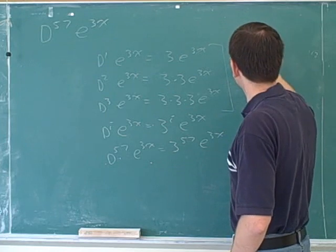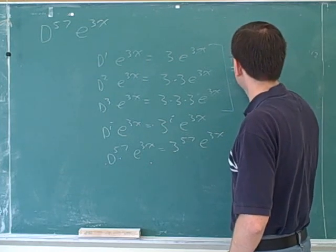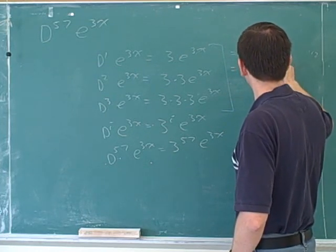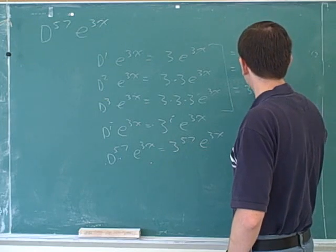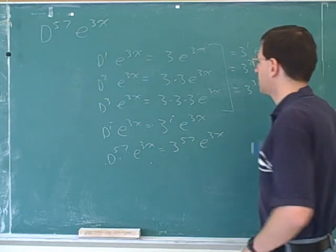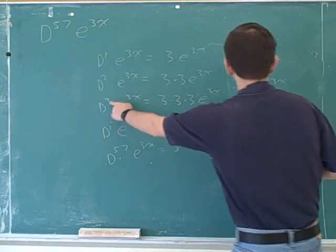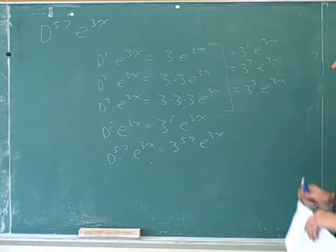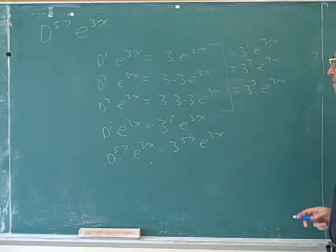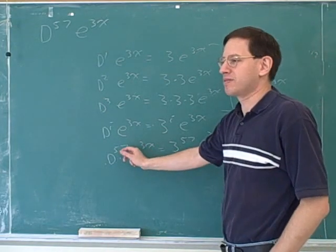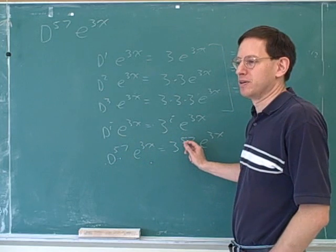Another way to write this is this is 3 to the first power e to the 3x. This is 3 to the second power e to the 3x. This is 3 to the third power. So what's the pattern? The pattern seems to be that whatever derivative you're taking, that just becomes the power of 3. Well, now we want to take the 57th derivative. So now that becomes the power of 3.